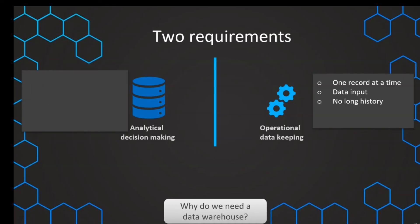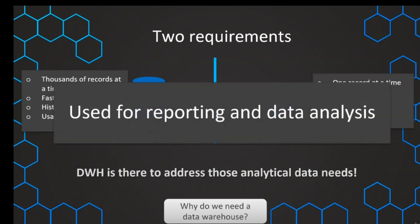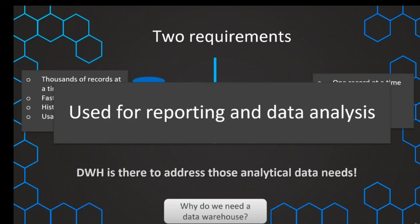Since we have those very different requirements, it makes a lot of sense to keep those different systems separated. A data warehouse is there to address the analytical data needs — it's a data location used for reporting and data analysis purposes. That's the simple definition of a data warehouse. In the next lecture we want to dive a little bit deeper into understanding what a data warehouse is.